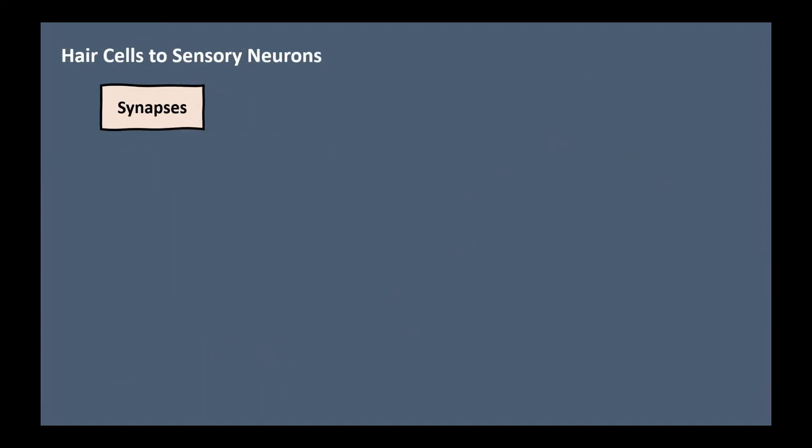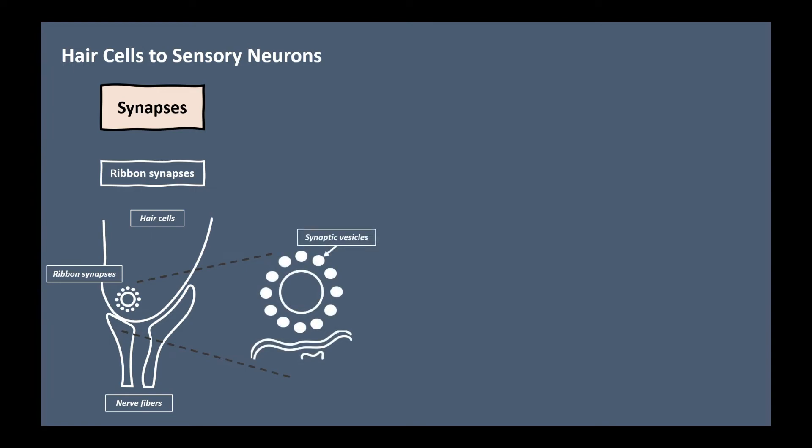Hair cells form synapses with sensory neurons like other sensory receptors. Their synapses are called ribbon synapses. Ribbon synapses lie in the cytoplasm next to the release site. It is surrounded by clear synaptic vesicles. That's why it's called ribbon synapses. This synapse is the gate of the signal transmission. When the hair cells release the neurotransmitter, the sensory neurons activate the electrical signal. Then why are ribbon synapses special for hair cells? They have unusual features that underlie the signaling abilities of the hair cells.